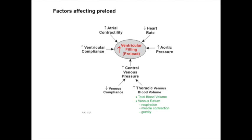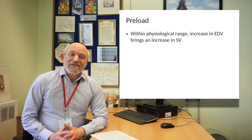You'll see on the slide these various factors influencing preload. They include the background pressure in the venous side of the circulation, which in turn reflects the compliance of the veins and the pressure within the chest, atrial contractility, heart rate, aortic pressure, and overall compliance of the ventricle. Those are the determinants of preload.